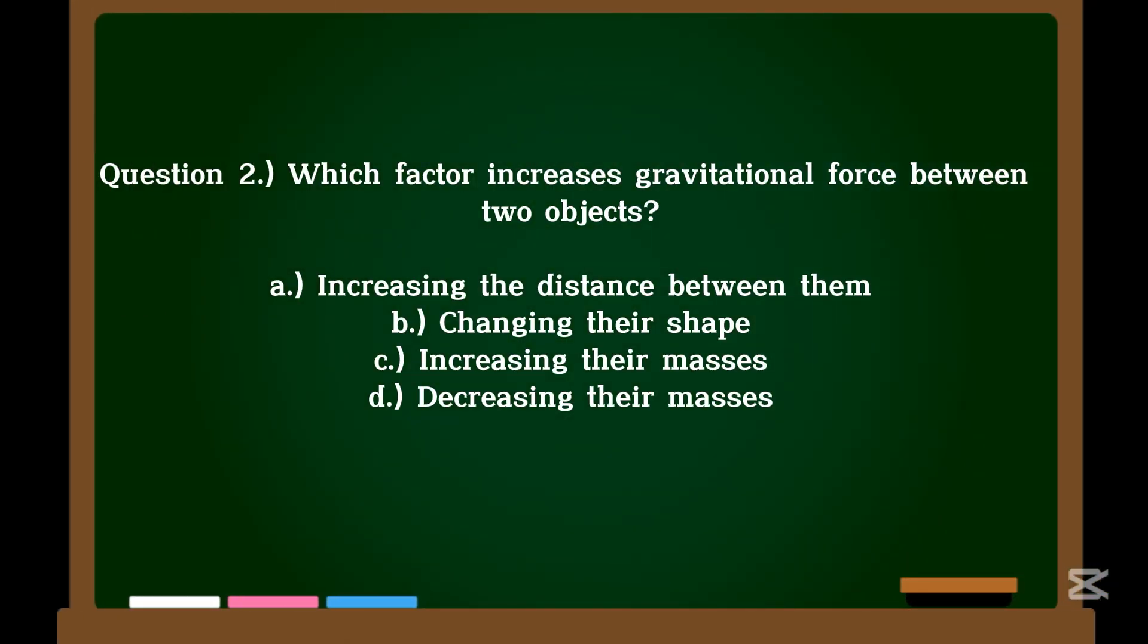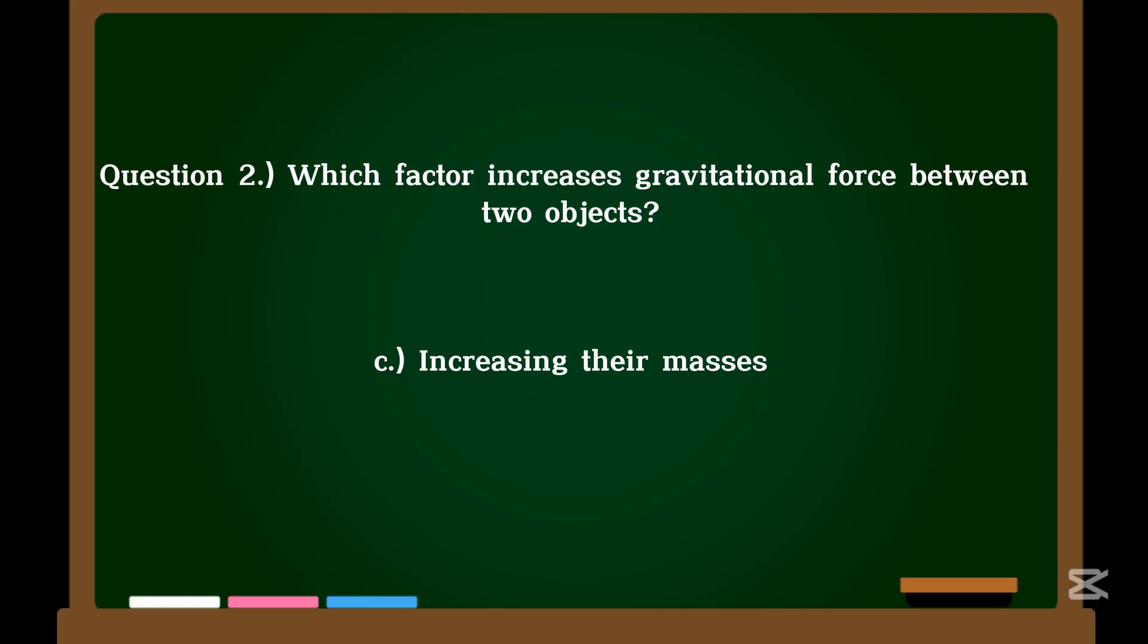Question 2. Which factor increases gravitational force between two objects? A. Increasing the distance between them. B. Changing their shape. C. Increasing their masses. D. Decreasing their masses. Correct answer: C. Increasing their masses.